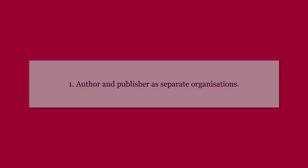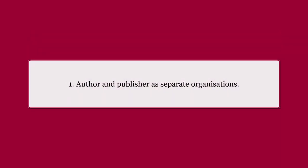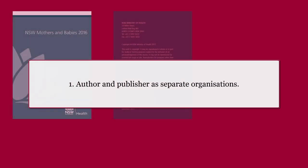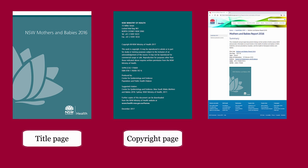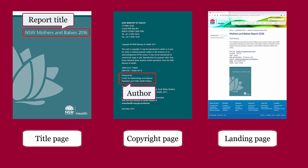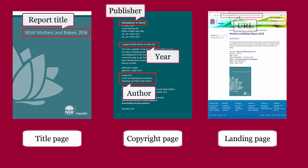First example: author and publisher are separate organisations. The details for citing an online report are usually found on the report's title page, copyright page, and report landing page. Important details include author, report title, publisher, year, and URL.